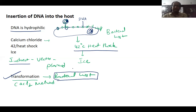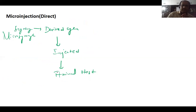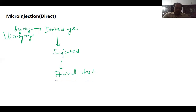The next method is micro injection — a direct method, meaning no vector is used. We take a micro syringe with micro capacity, load the desired gene into it, and inject it into the animal host. During the pregnancy period of the animal host, we introduce the desired gene so it can manipulate and integrate into the host.